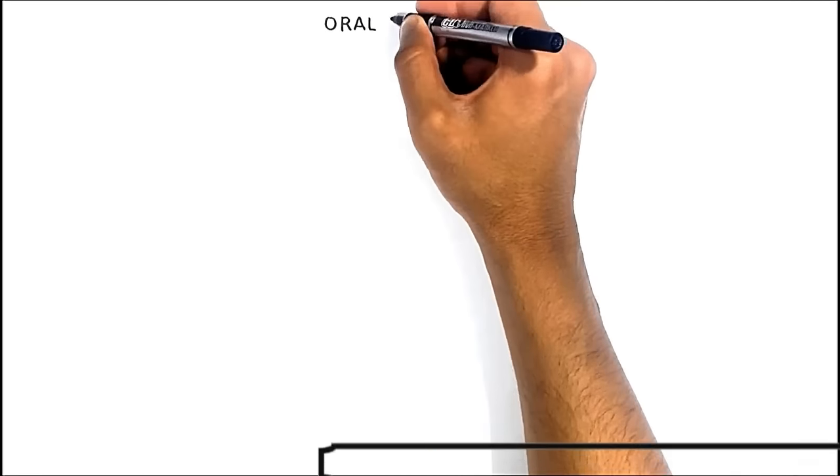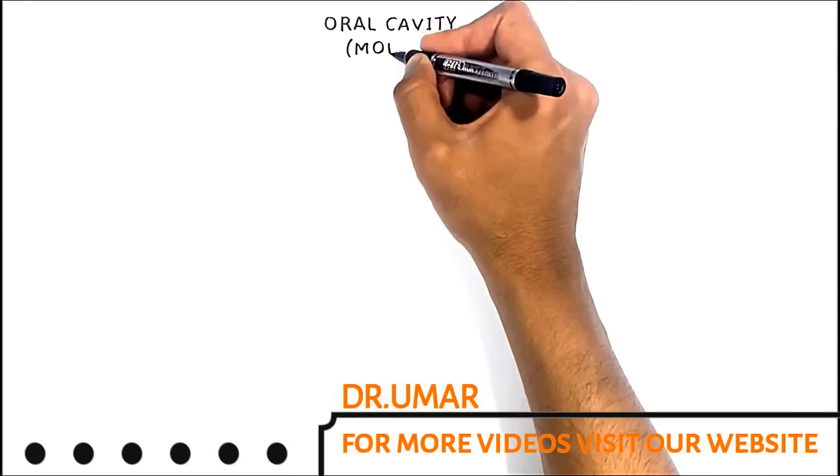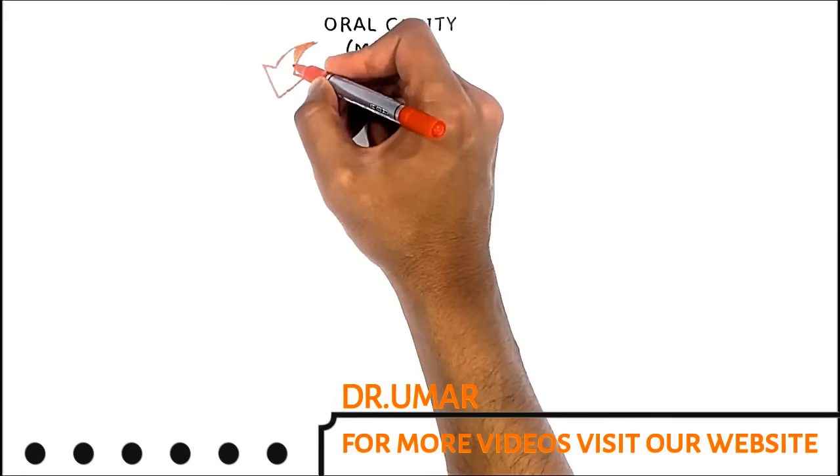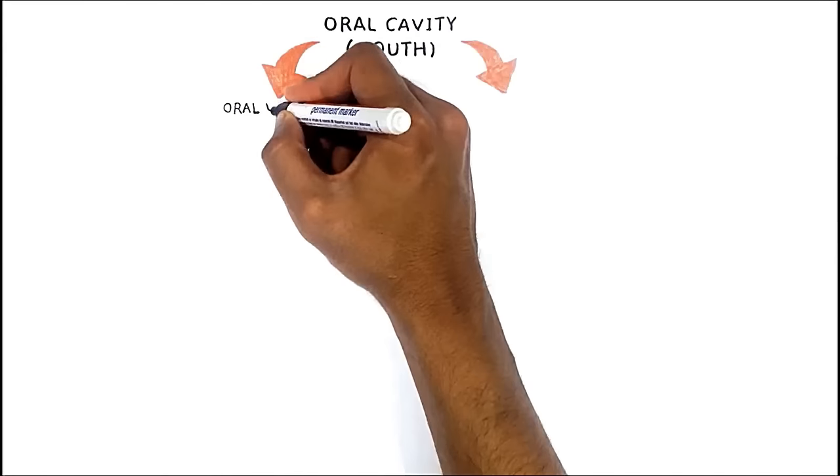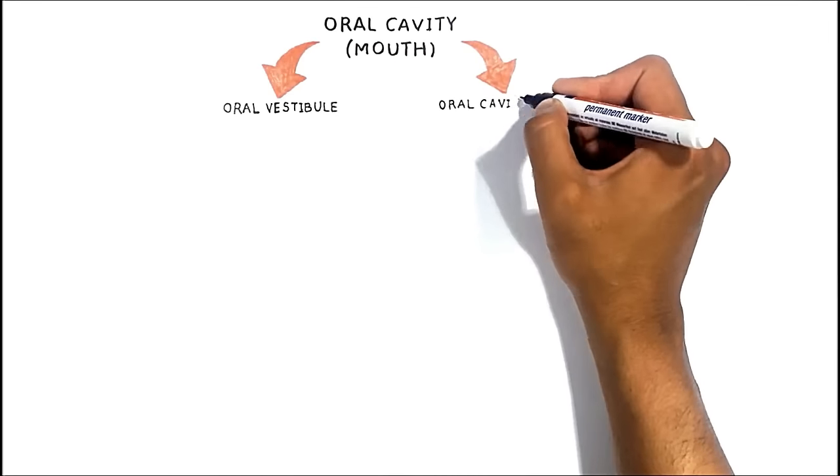The oral cavity or mouth represents the first part of the digestive tube. Anatomically speaking, it is separated into two parts: the oral vestibule and the oral cavity proper.